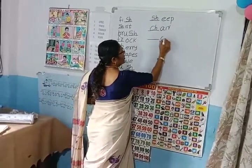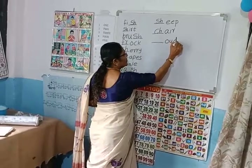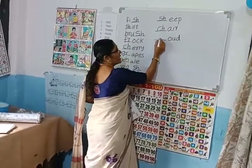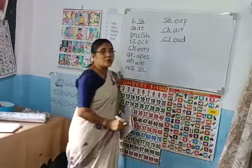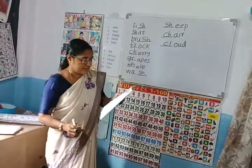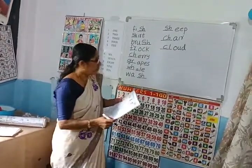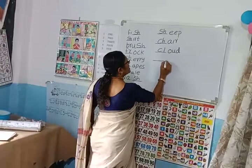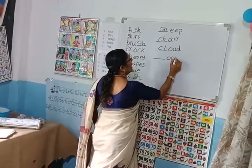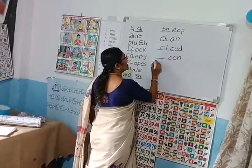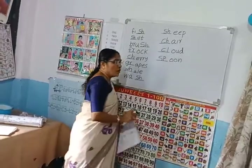Dash, O, U, D — which letter comes here? C, L — cloud. Dash, O, O, M — which letter comes here? S, P — spoon.